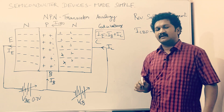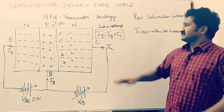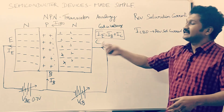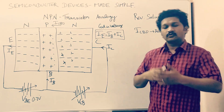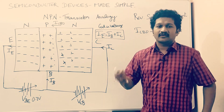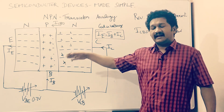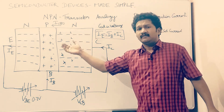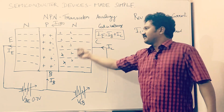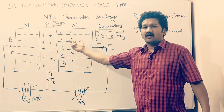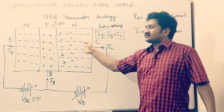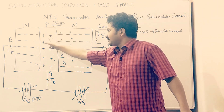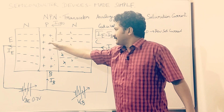So when does this reverse saturation current occur? When this device is operating and the temperature of the NPN transistor increases — any device operated for a longer amount of time will have its temperature increase to some extent. So from the normal operating temperature of the NPN transistor, if the temperature increases, there will be an occurrence of reverse saturation current — the recombination of holes and electrons in the collector and base regions respectively.